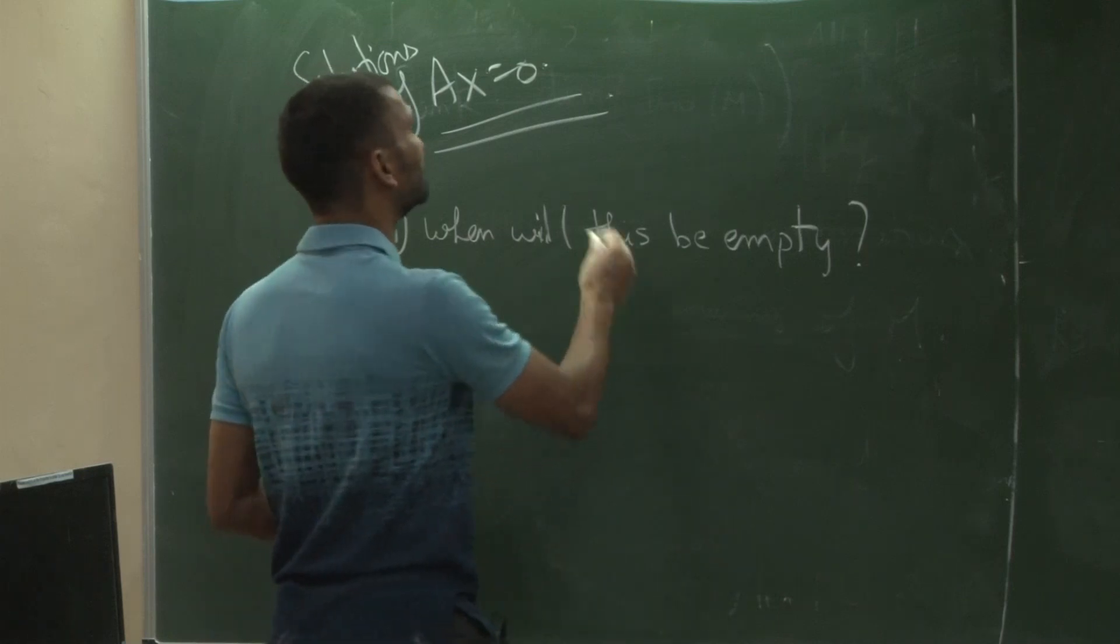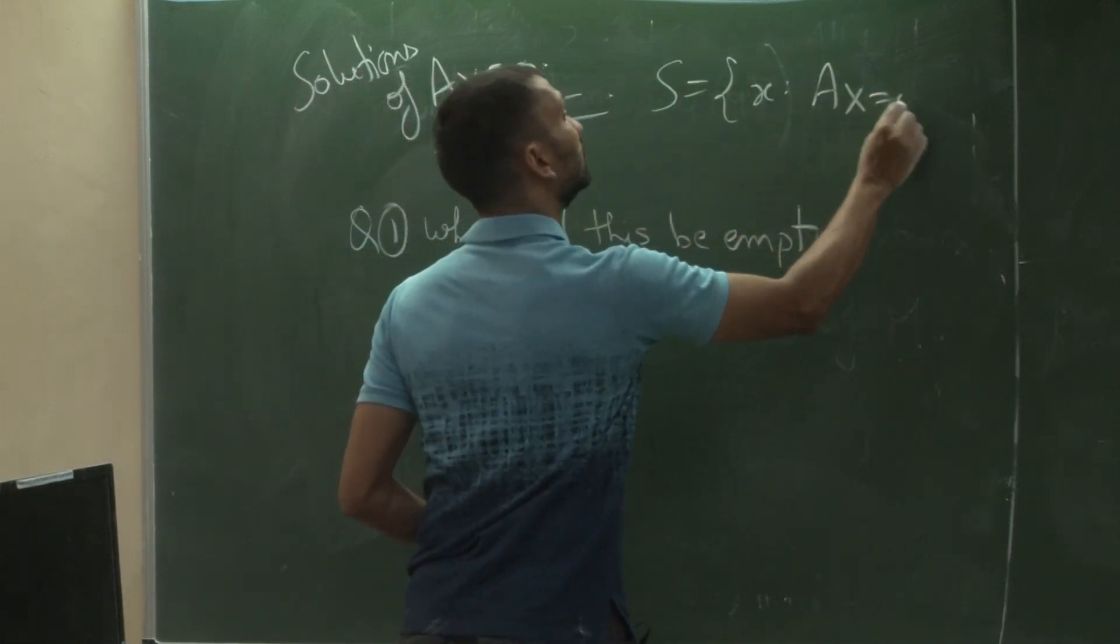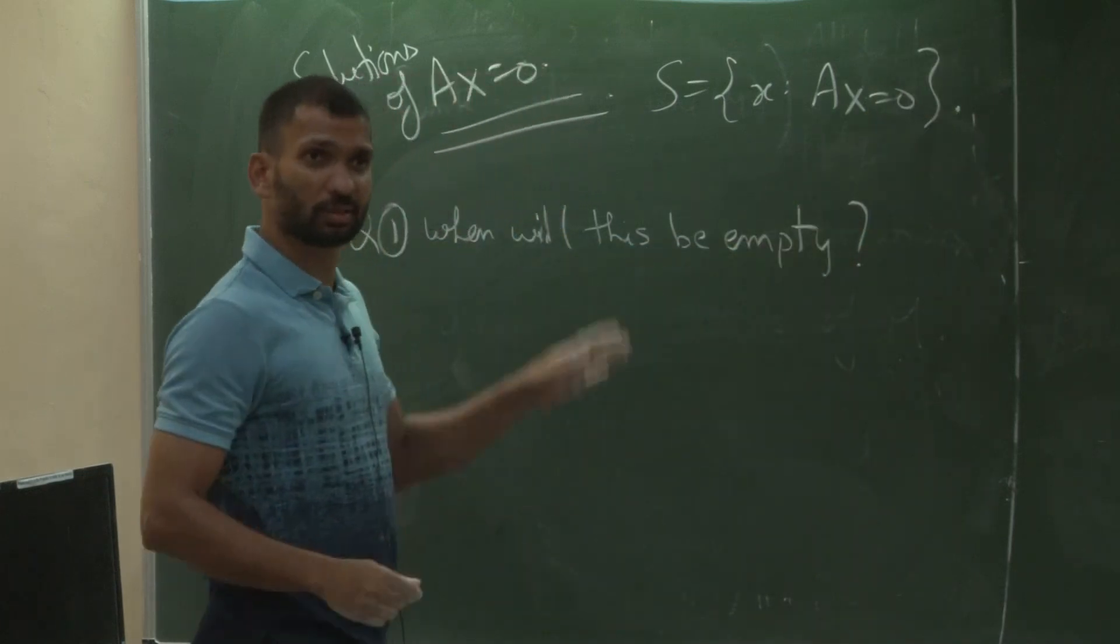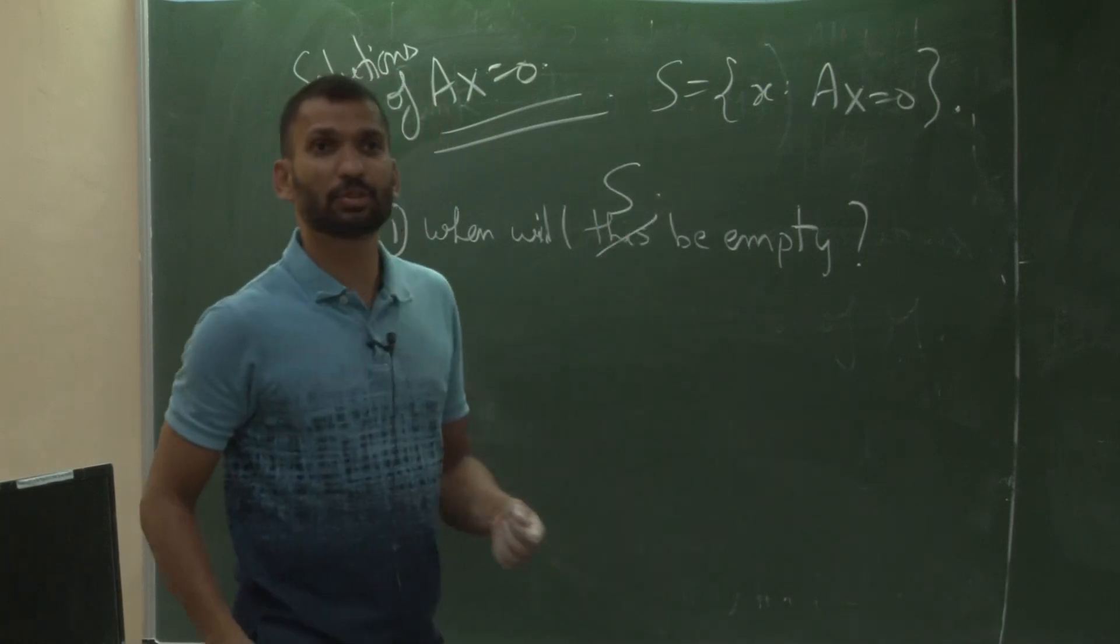When will the solution set, when I say this, I mean let's say S is my set of feasible points in this constraint system, when will S be empty?